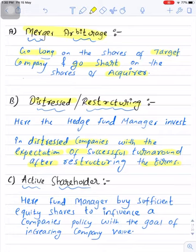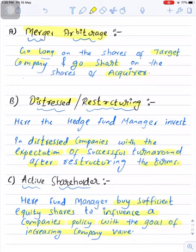Number three is the active shareholder strategy. Under this strategy, the hedge fund manager buys sufficient equity shares to influence a company's policy with the goal of increasing company value. Continuing with the example of a distressed company, a fund manager buys sufficient equity shares of the distressed company in order to influence the company's policies with the goal of making the situation of the company better in the future.